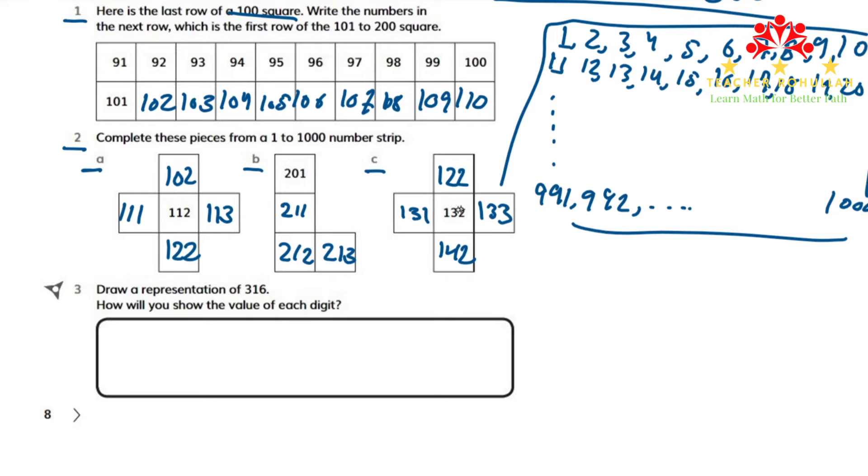So in this case, the difference between each number in a column is 10, not 100. Because if we consider 1 to 100, we can have a difference of 100. If we write the number 1 to 1000 strip, we can make it this way also.